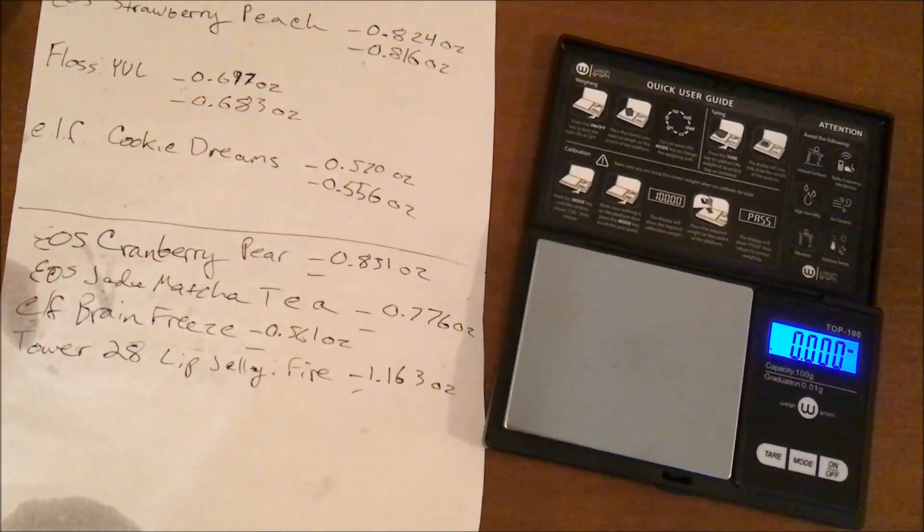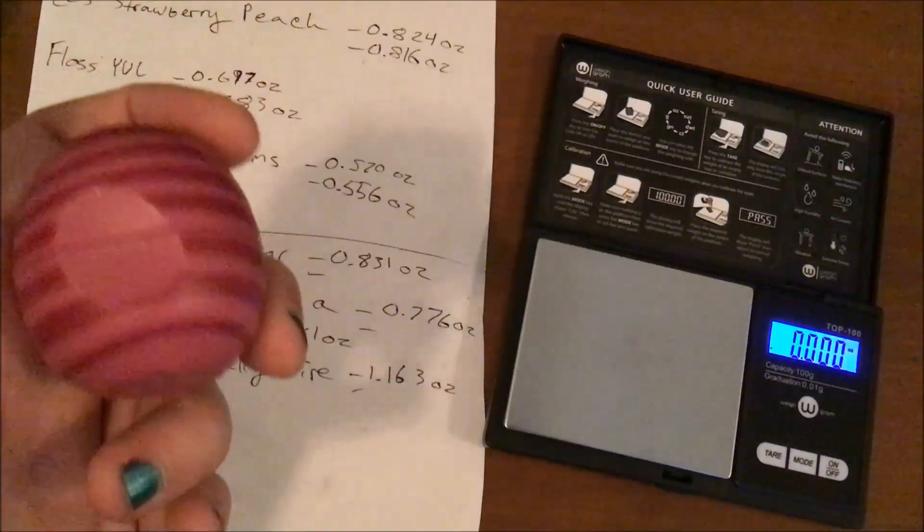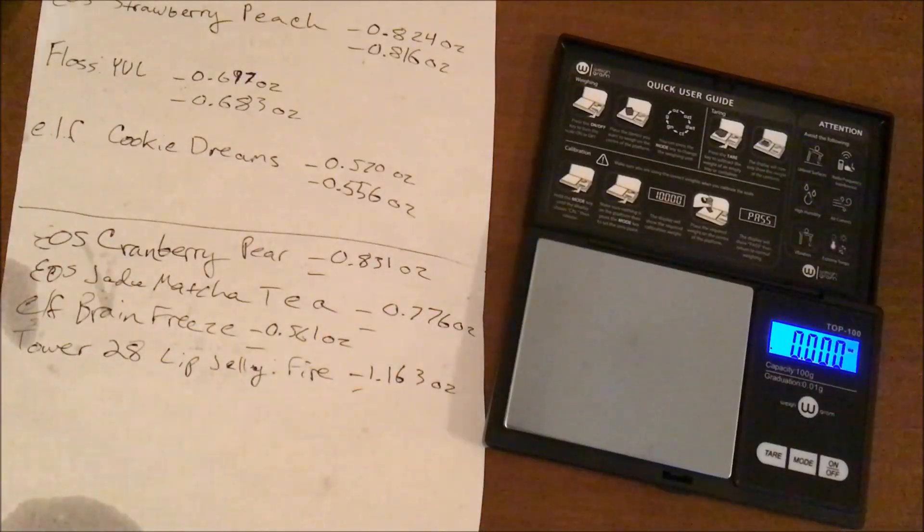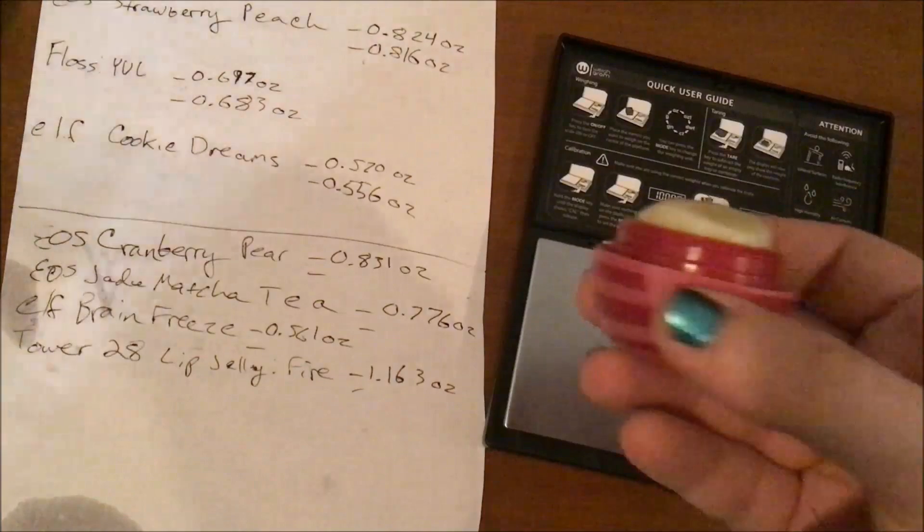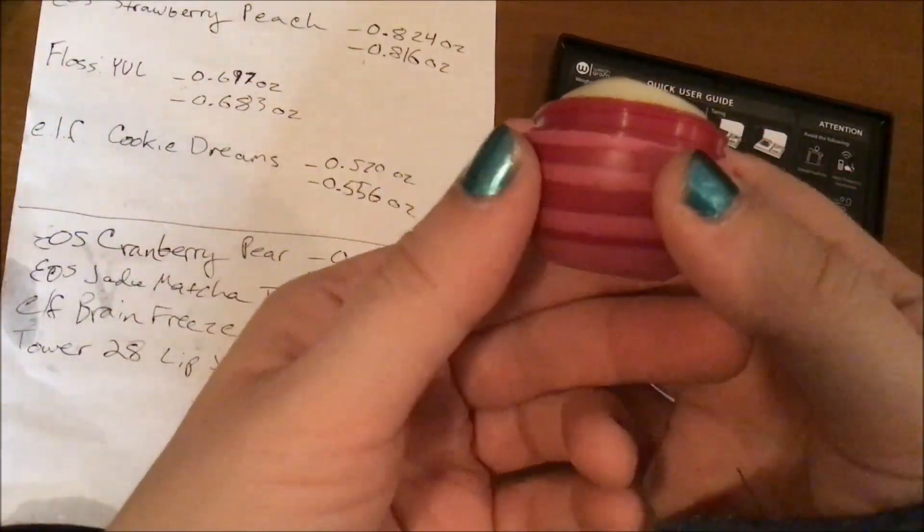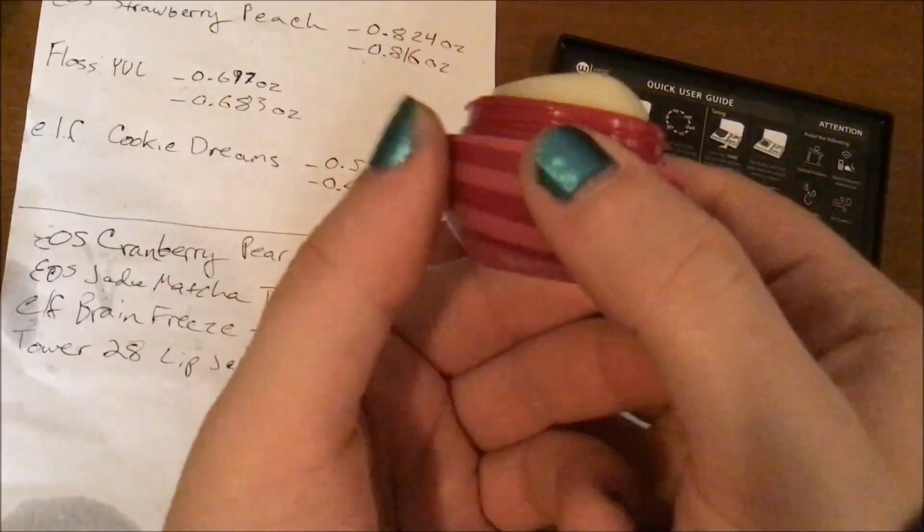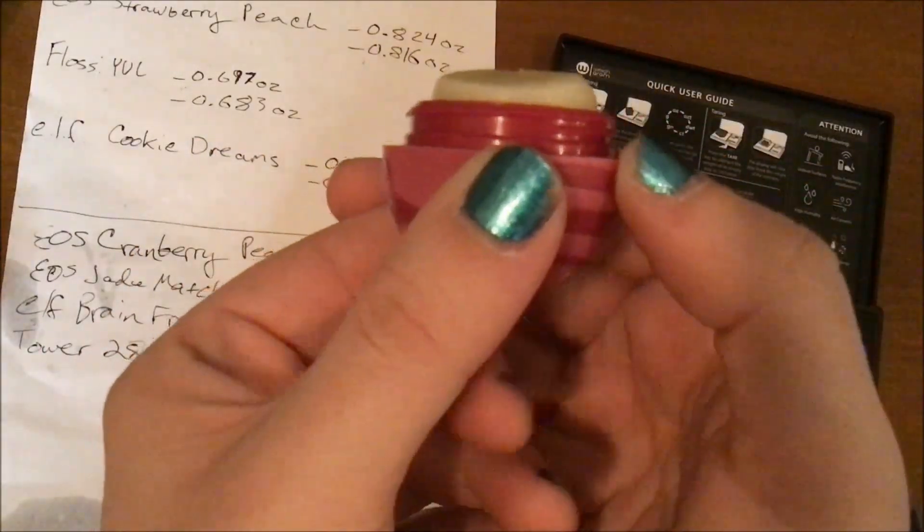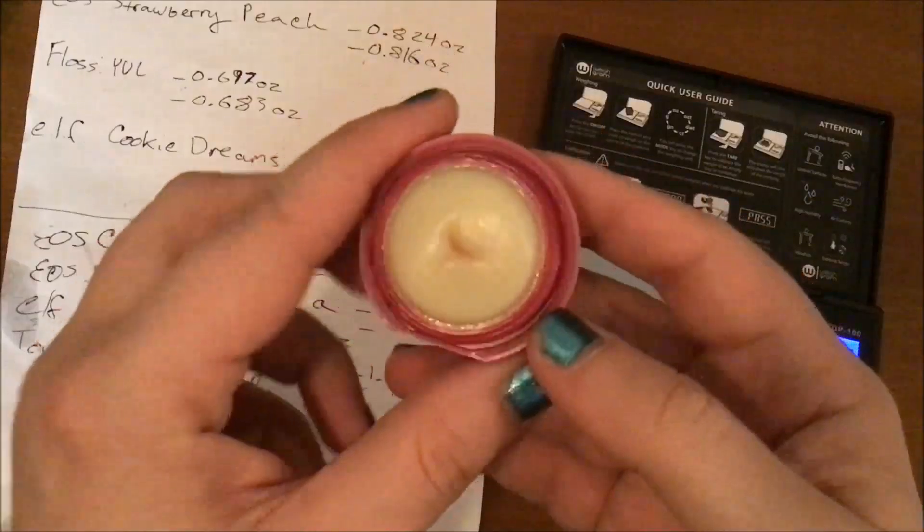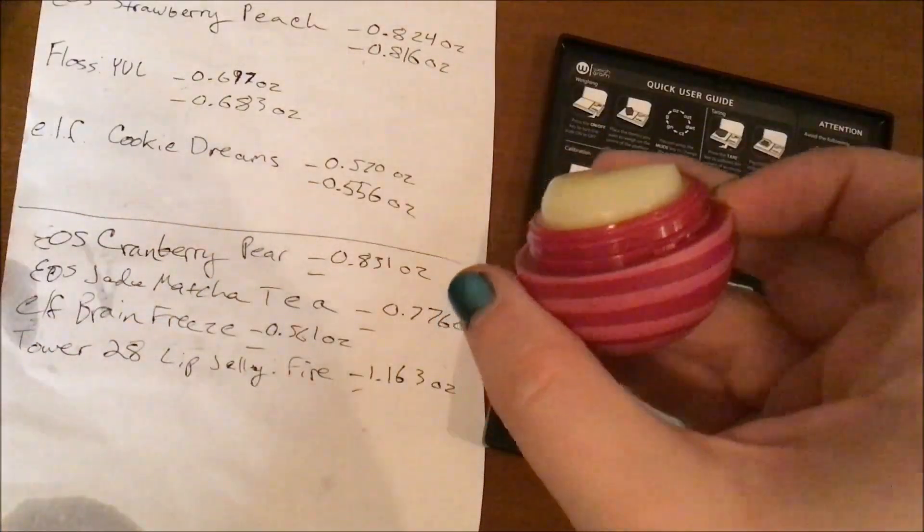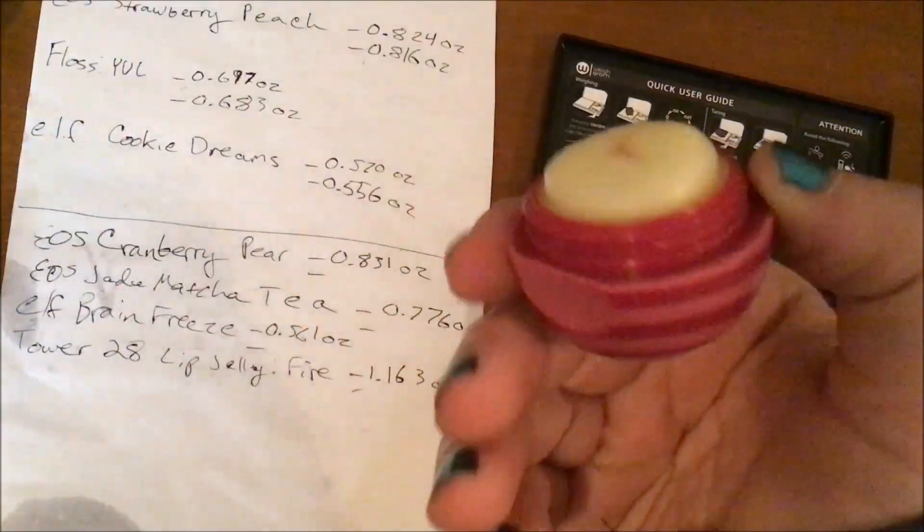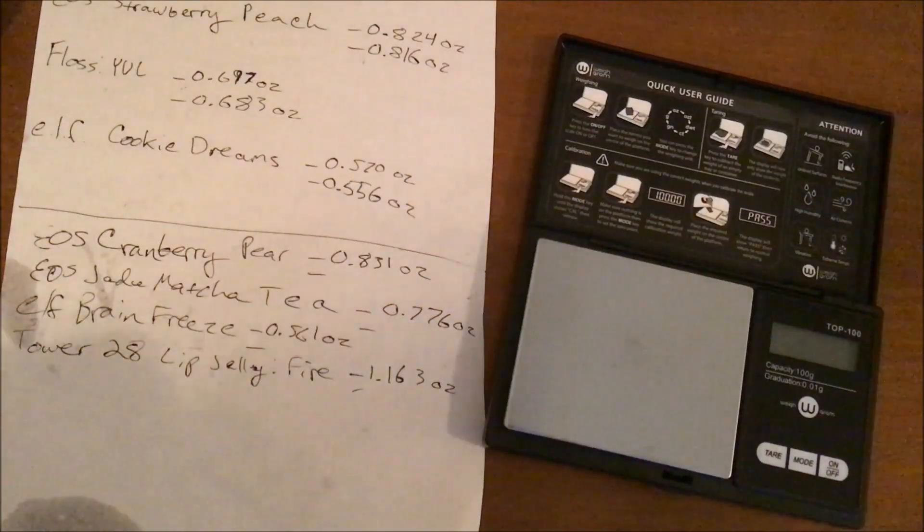Starting off where we started last week, we have the perennial EOS Cranberry Pear which is staying until it's gone. It was at 0.831 ounces last week and it is now looking like this. We're getting it down, that one side is still higher, but I think we've made nice progress and it is still continuing to be smoothed over.